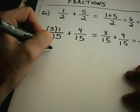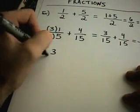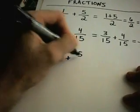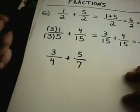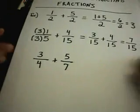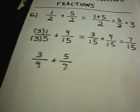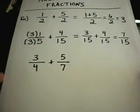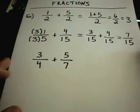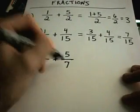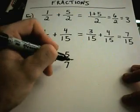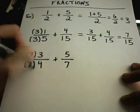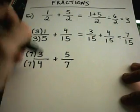Likewise, sometimes you may have to change both of them. Suppose I have 3 over 4 and 5 over 7. So again, you have to find the smallest number that both 4 and 7 will go into. One way to do these problems sort of without thinking about it is if you look at the other denominator, in this case 7, you can multiply top and bottom of that fraction by that number.